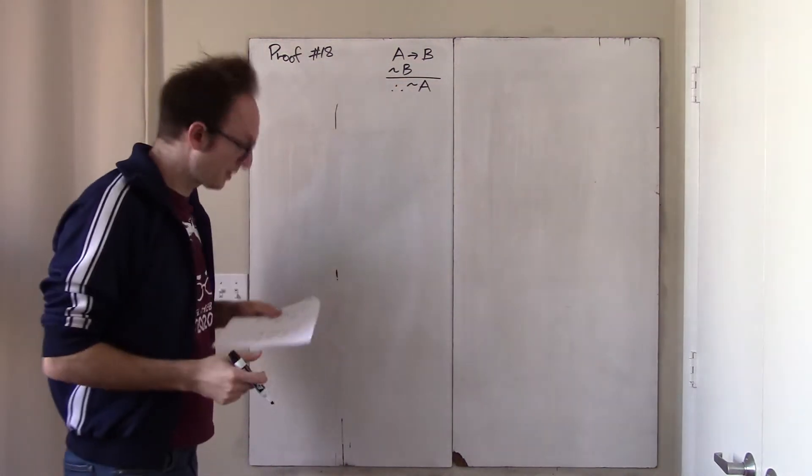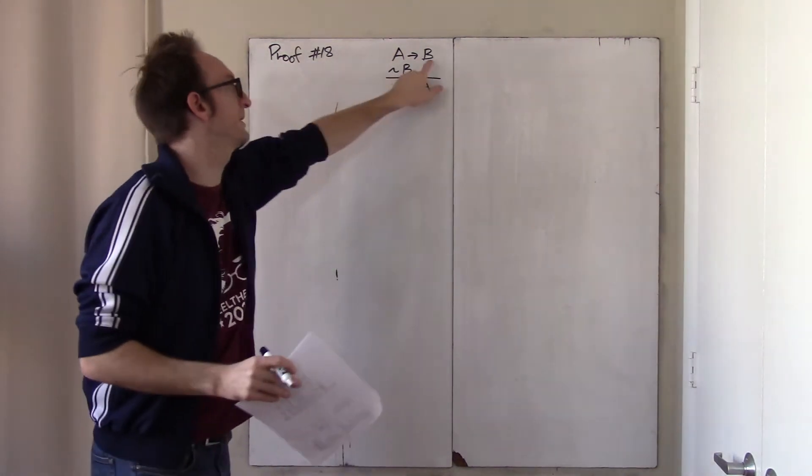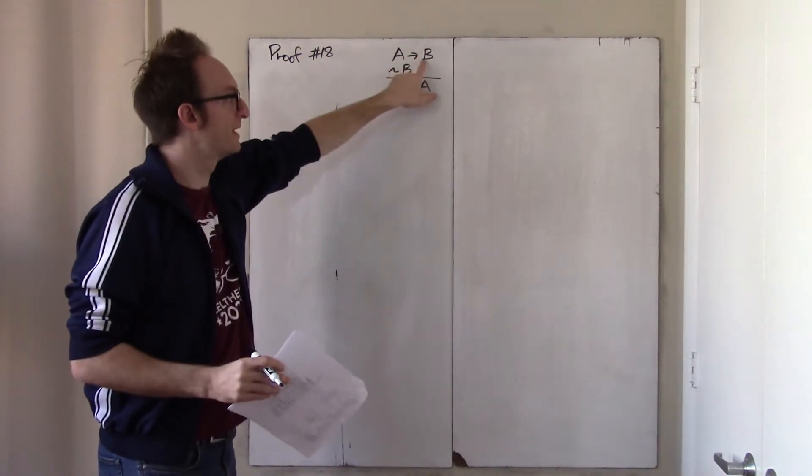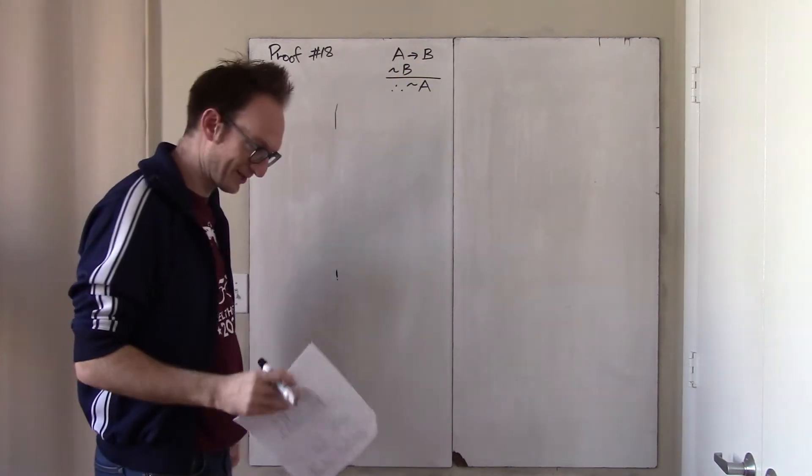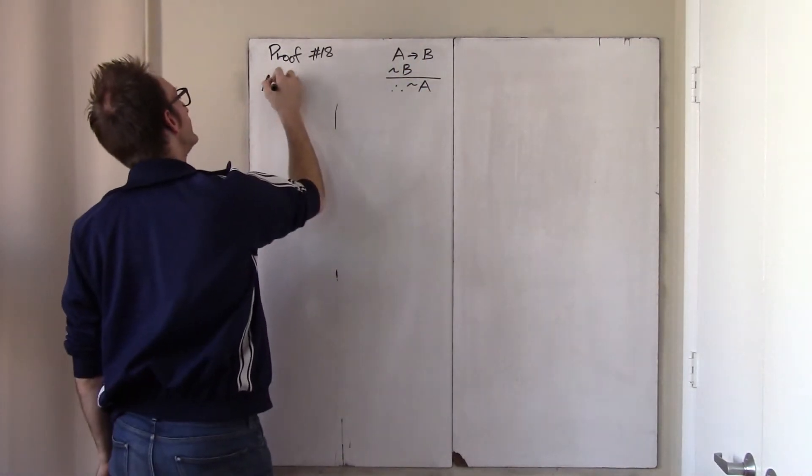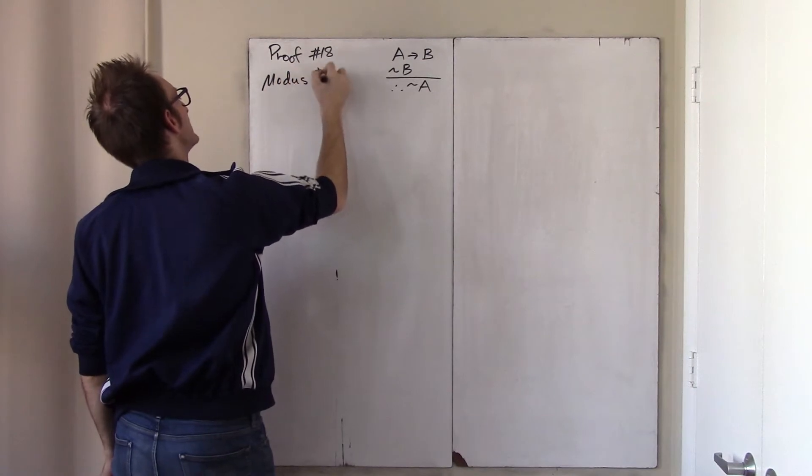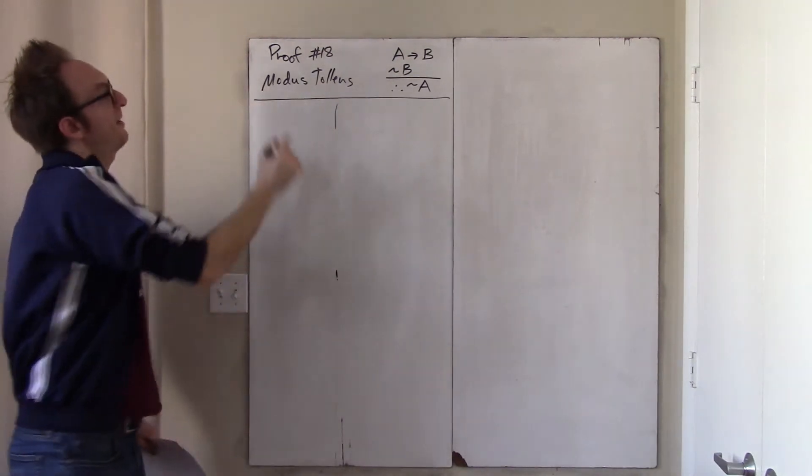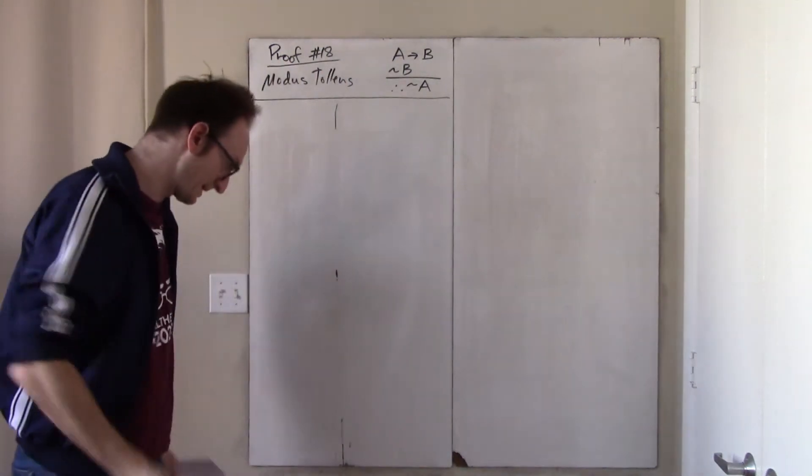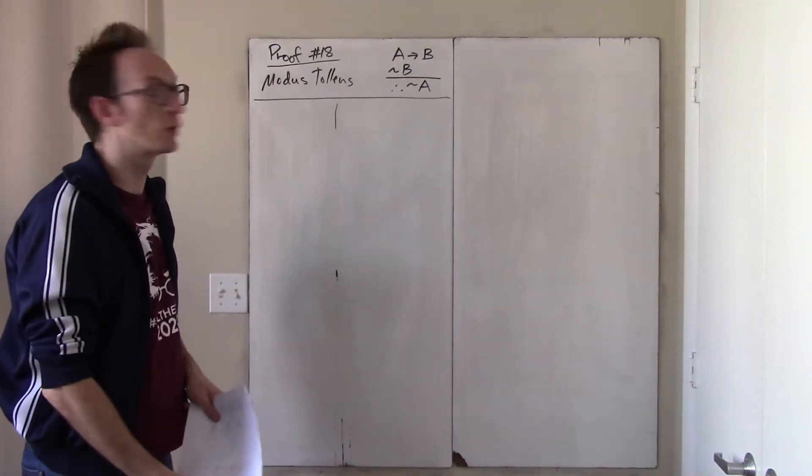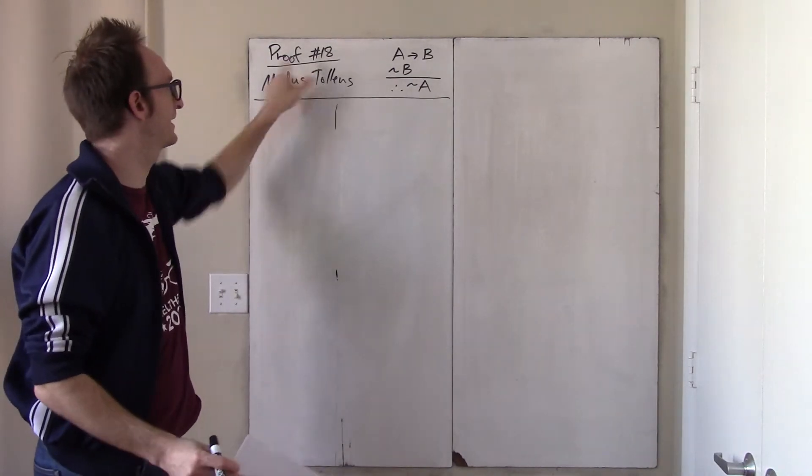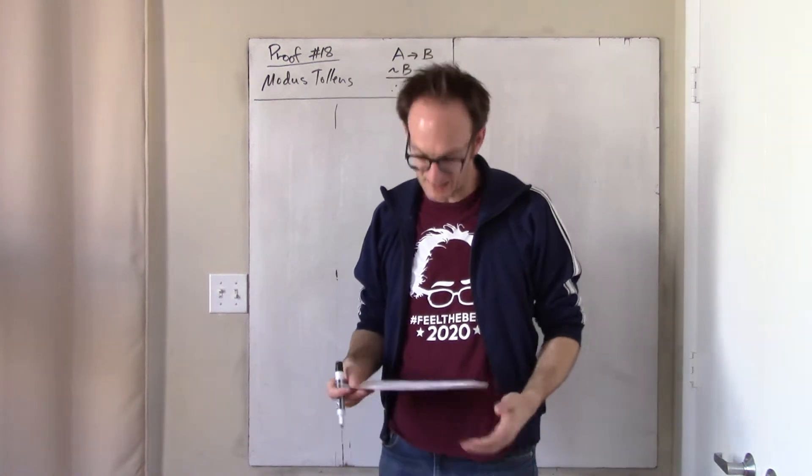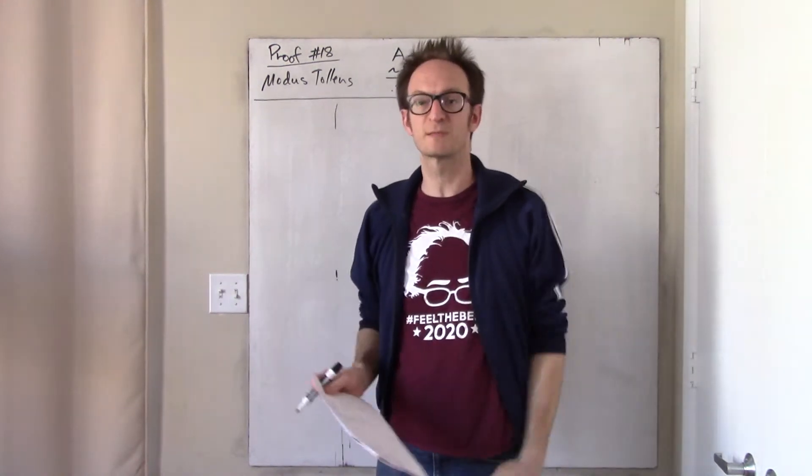And the idea is, if A then B, but not B, so therefore not A, because if A, well then B would be a contradiction. And that's kind of the whole proof. This is called modus tollens, and if you've taken another logic course, perhaps you're even told to memorize this Latin name. I think it's like modus tollendo tollens, which I can never remember what that Latin means exactly.